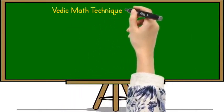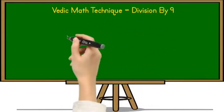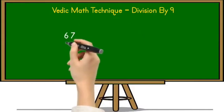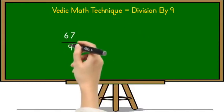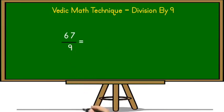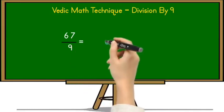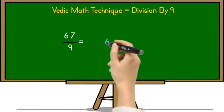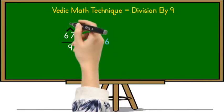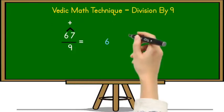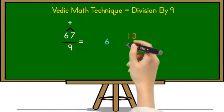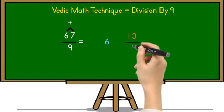Let's solve the next example: 67 divided by 9. To solve this we use the same strategy as the previous one. First, write down 6, which is the 10th place digit of 67. After that, add the unit and 10th place digits of 67 together: 6 plus 7 equals 13. Now divide 13 by 9.